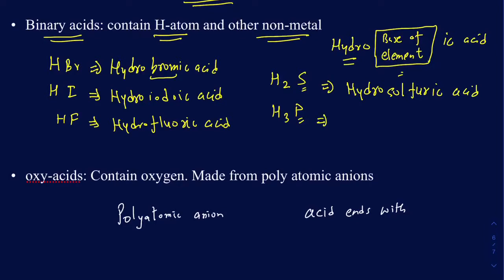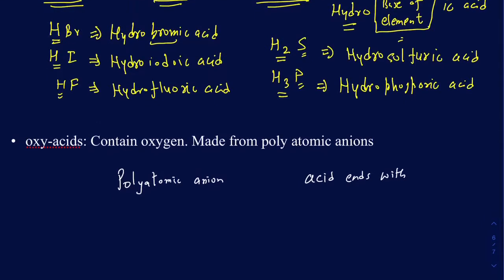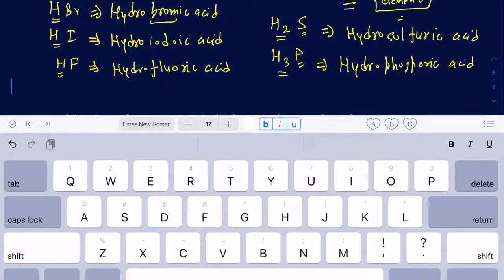And then H3P — again, it starts with 'hydro' and it's going to be hydrophosphoric acid. Now you may have wondered why I use one hydrogen for HBr, HI, and HF, two hydrogens for H2S, and three hydrogens for H3P.